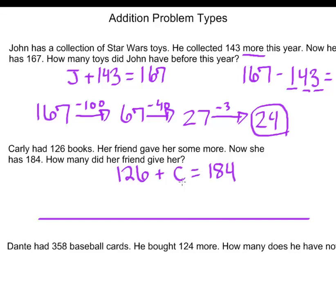So when we have a problem where we are missing information in the middle, one way that we can choose to solve it is by starting from 126 and counting our way up to 184 to find the distance in between these two numbers.